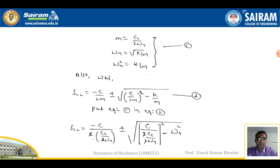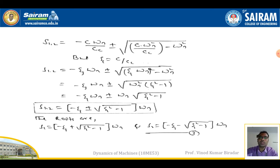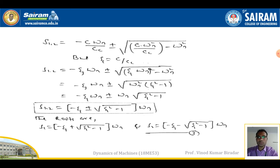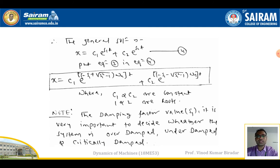After cancellation, we get s₁,₂ = −(c/cc)·ωn ± √[(c·ωn/cc)² − ωn²]. Substituting ζ = c/cc, this simplifies to s₁,₂ = (−ζ ± √(ζ² − 1))·ωn — equation number three. The two roots are s₁ = (−ζ + √(ζ² − 1))·ωn and s₂ = (−ζ − √(ζ² − 1))·ωn.